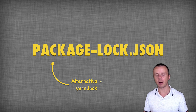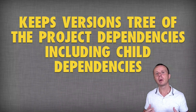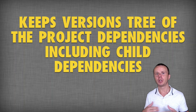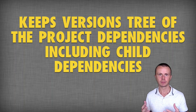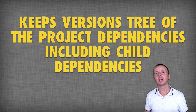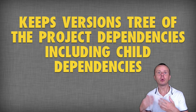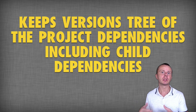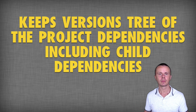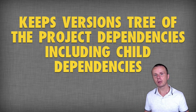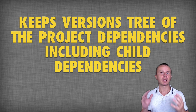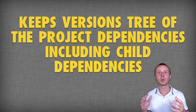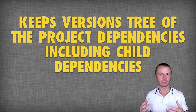So why do we need this file? Remember that when you install each dependency listed in the package.json file, and if that package has its own dependencies, they will be installed as well. The lock file keeps track of all installed dependencies, along with child dependencies and child of child dependencies.